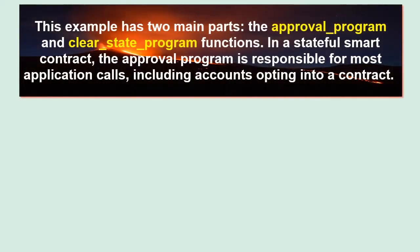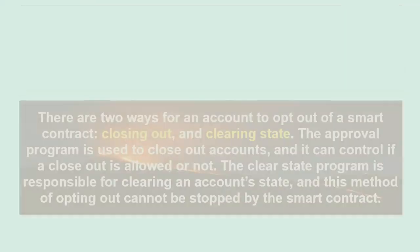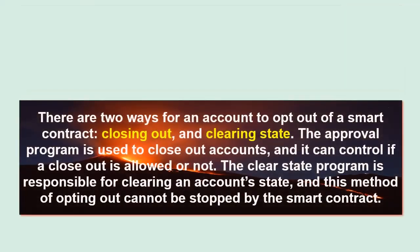This example has two main parts: the approval_program and clear_state_program functions. In a stateful smart contract, the Approval Program is responsible for most application calls, including accounts opting into a contract. There are two ways for an account to opt out: closing out and clearing state. The Approval Program is used to close out accounts, and it can control if a close out is allowed or not. The Clear State Program is responsible for clearing an account's state, and this method of opting out cannot be stopped by the smart contract.